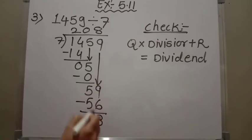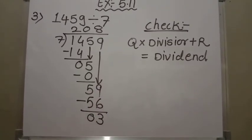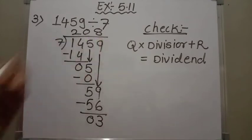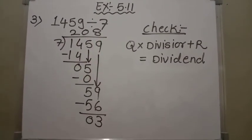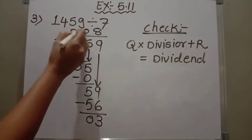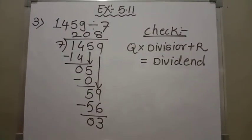So here I am going to divide 7 eights are 56. Now 9 minus 6 is 3, and 5 minus 5 is 0. As there is no digit after 9 we stop here. So in this long division our quotient is 208 and remainder is 3.